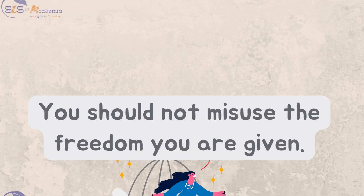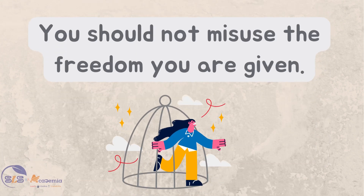Let us see another example. In the sentence 'You should not misuse the freedom you are given,' the word freedom is a noun but we cannot perceive it through our five senses. We cannot see, hear, touch, taste or smell it. So the word freedom is an example of an abstract noun.